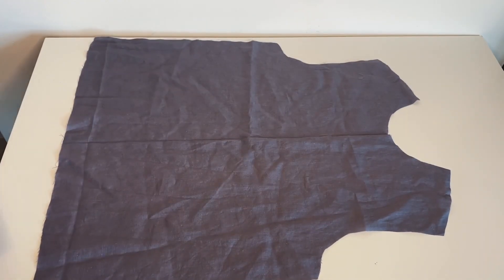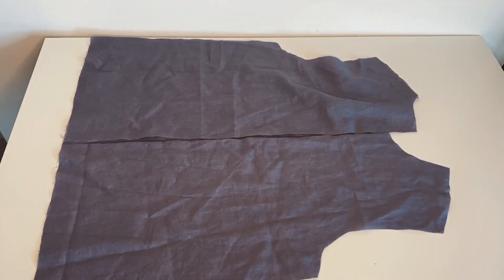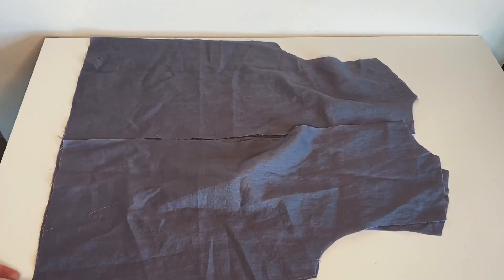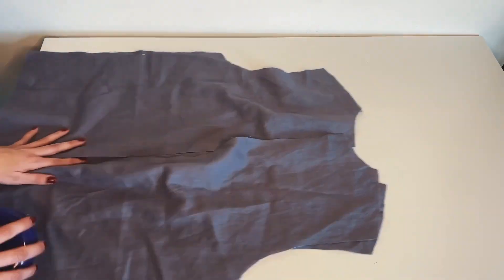First, take the front pieces and place them on the back piece, making sure the right sides of the fabric are facing each other. Pin the sides and the shoulders of the shirt together, stitch them together with a seam allowance of 1 centimeter, and finish them with an overlock stitch.